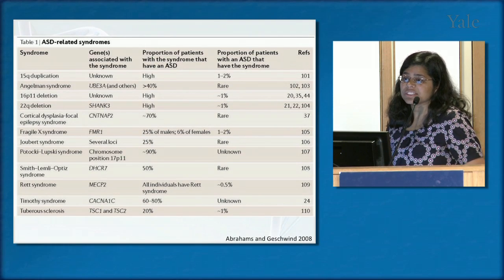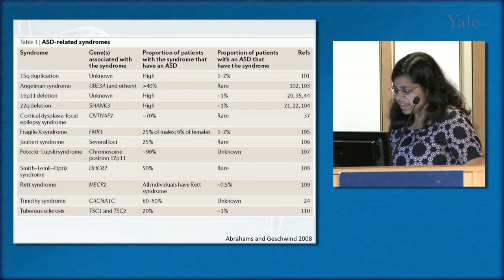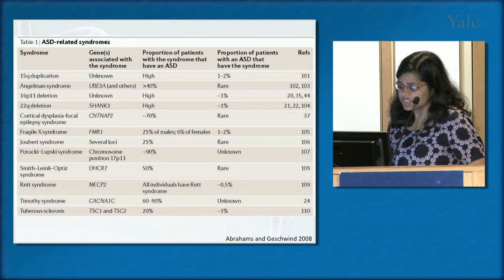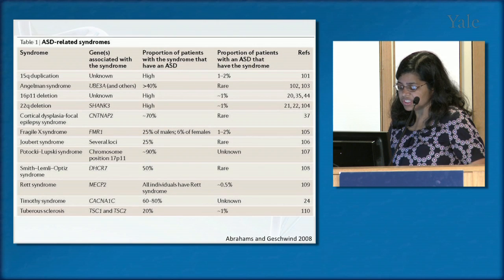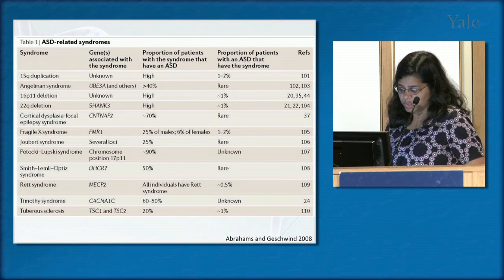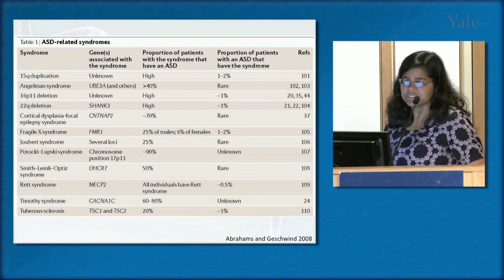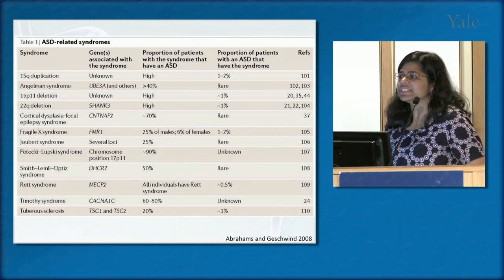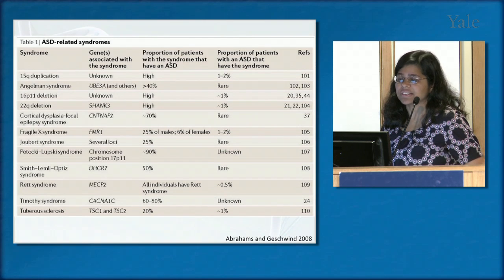It's also not necessary or sufficient to cause autism. Another example is tuberous sclerosis, due to mutations in TSC1 and TSC2 genes. About 20% of those patients meet criteria for autism, but tuberous sclerosis is only found in about 1% of autism patients. It's a rare cause, but still important because these kinds of overlaps give us clues about what might be causing autism.